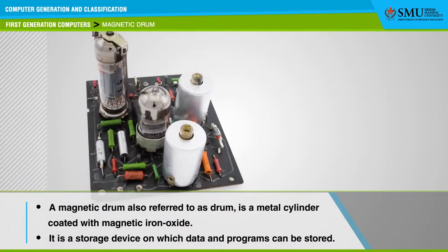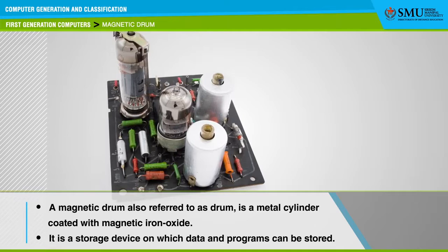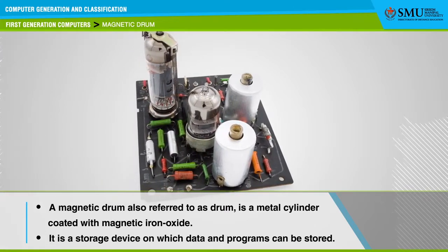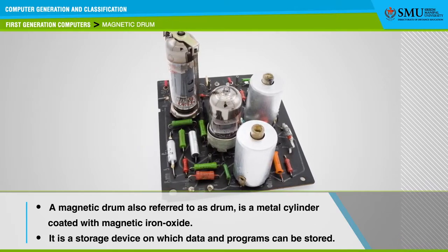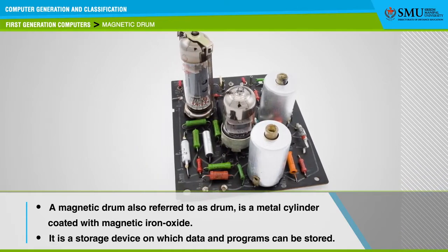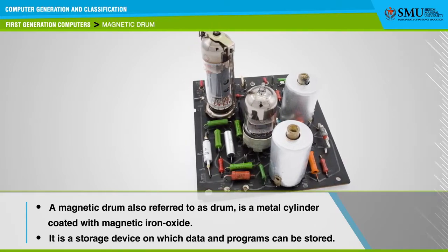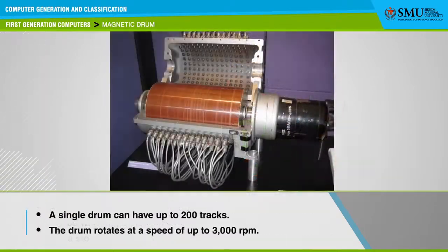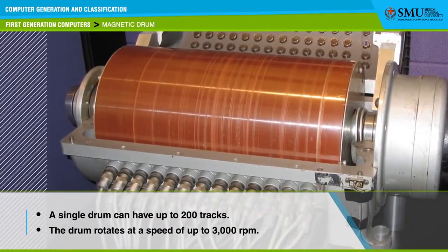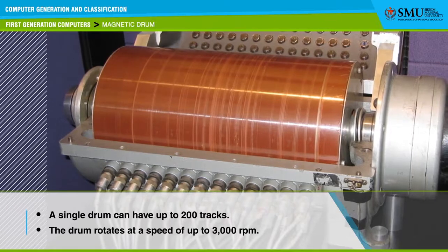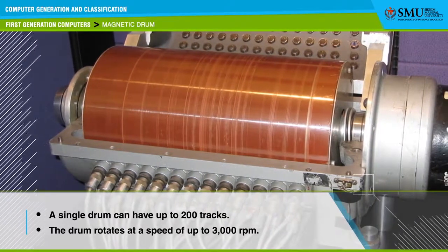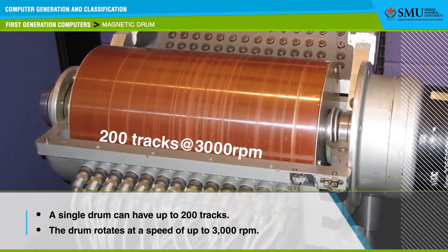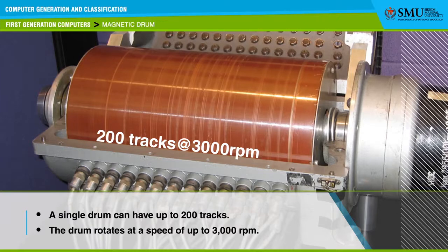Let us look at how the magnetic drum worked. The drum is a metal cylinder coated with magnetic iron oxide, which acts as a storage device on which data and programs can be stored. Magnetic drums were once used as a primary storage device but now are used as supplementary storage devices. The tracks on a magnetic drum are assigned to channels located around the circumference of the drum, forming adjacent circular bands. A single drum can have up to 200 tracks and rotates at a speed of up to 3000 RPM.